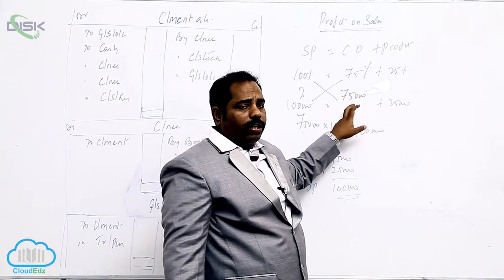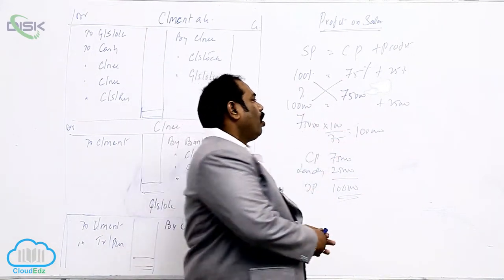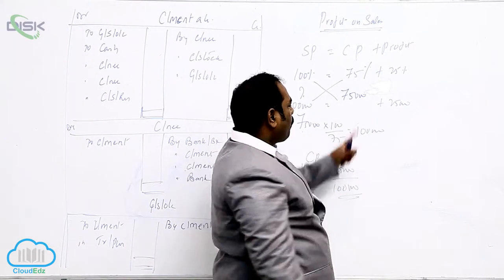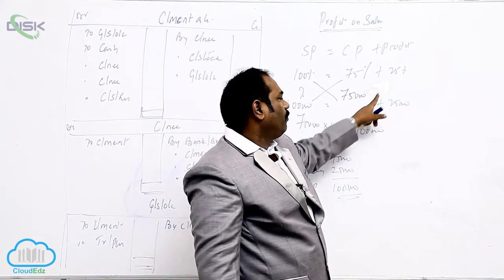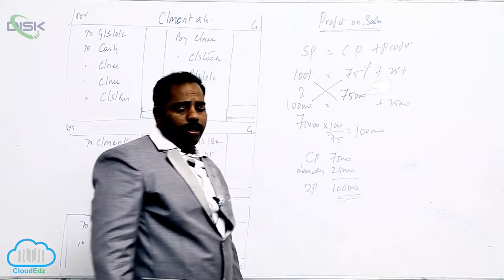75% equals 75,000. What is 100%? Cross multiply. Or 75% equals 75,000. What is 25%? Then you get 25,000, which is loading.